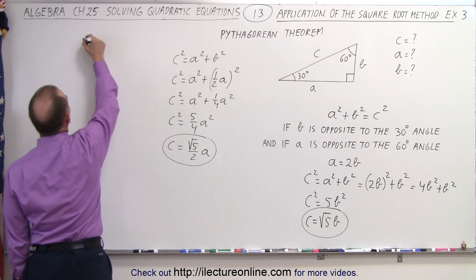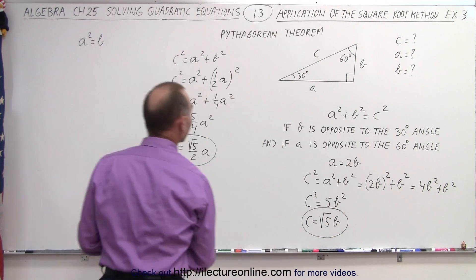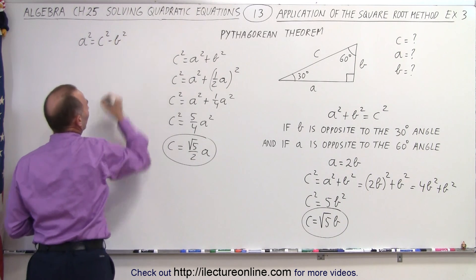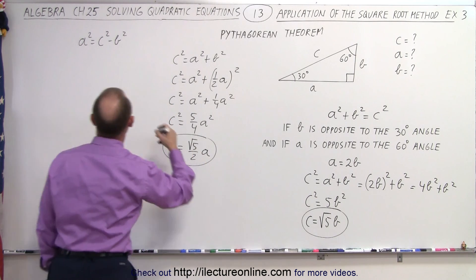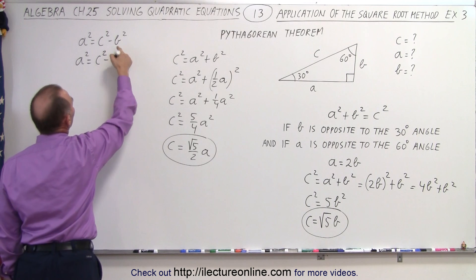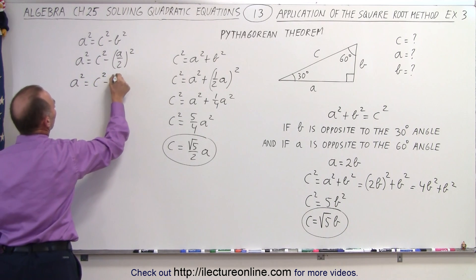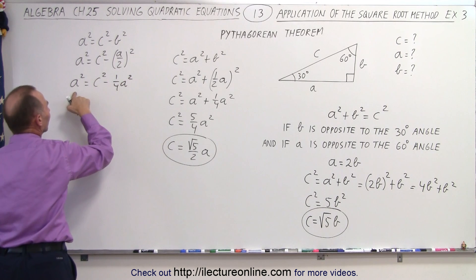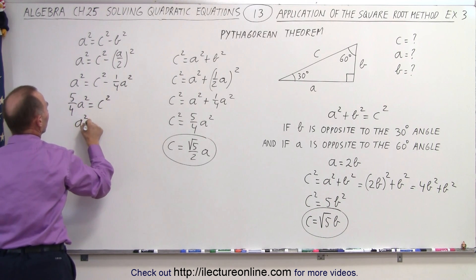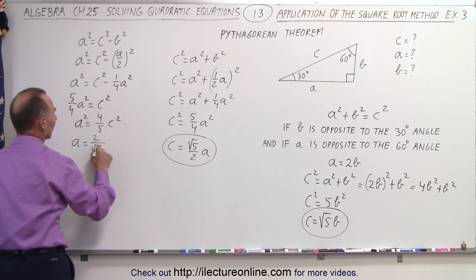What about A? I'm going to solve for A squared by moving B squared to the other side, so A squared is equal to C squared minus B squared. Keep in mind that B was equal to half A, so A squared equals C squared minus A over 2 quantity squared. That means A squared equals C squared minus one-quarter A squared. Adding to the left side: 1 plus one-quarter gives 5 quarters A squared equals C squared, or A squared equals 4 over 5 C squared, which means A equals 2 divided by the square root of 5 times C.